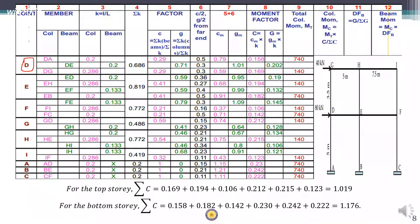Once you have the relative stiffnesses, find the sum of relative stiffness for each joint. For joint D it is 0.2 + 0.2 + 0.286. The next step is to find the column factor and girder factor. The column factor c is the sum of relative stiffness of all beams at a joint divided by total relative stiffness — for joint D: 0.2 / 0.686 = 0.29. The girder factor g is the sum of relative stiffness of all columns: (0.2 + 0.286) / 0.686 = 0.71. Similarly find column factor and girder factor for all other joints. Note that all columns at the same joint share the same column factor value.